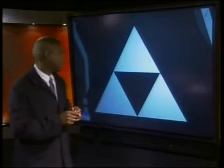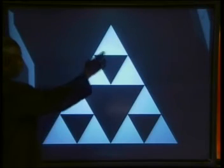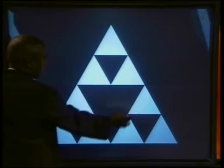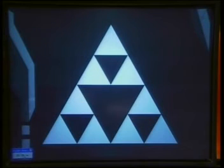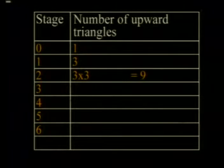At stage 2, the midpoints of each side of the three new triangles are joined and we get 1, 2, 3, 4, 5, 6, 7, 8, 9 triangles. At stage 2, we now have 3 times 3, which gives us 9 triangles.